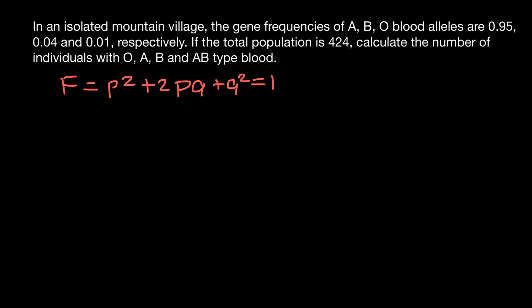This is true when we have two alleles — allele p and allele q — which make three genotypes. But here we have three alleles, so three alleles make four blood groups: blood group O, A, B, and AB. Our formula will slightly change.